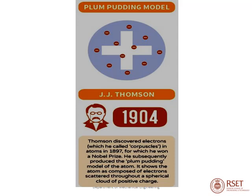The second model is the plum pudding model, discovered by J.J. Thomson in 1904. He discovered electrons, which he called corpuscles, in 1897, for which he won a Nobel Prize. He subsequently produced the plum pudding model, showing the atom as composed of electrons scattered throughout a spherical cloud of positive charge — a positive charge surrounded by negatively charged particles.